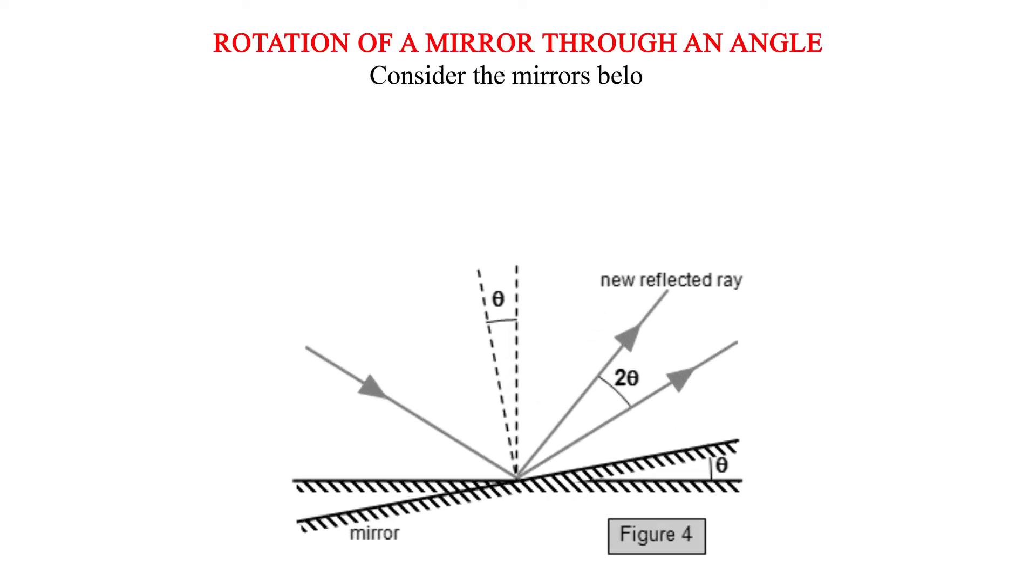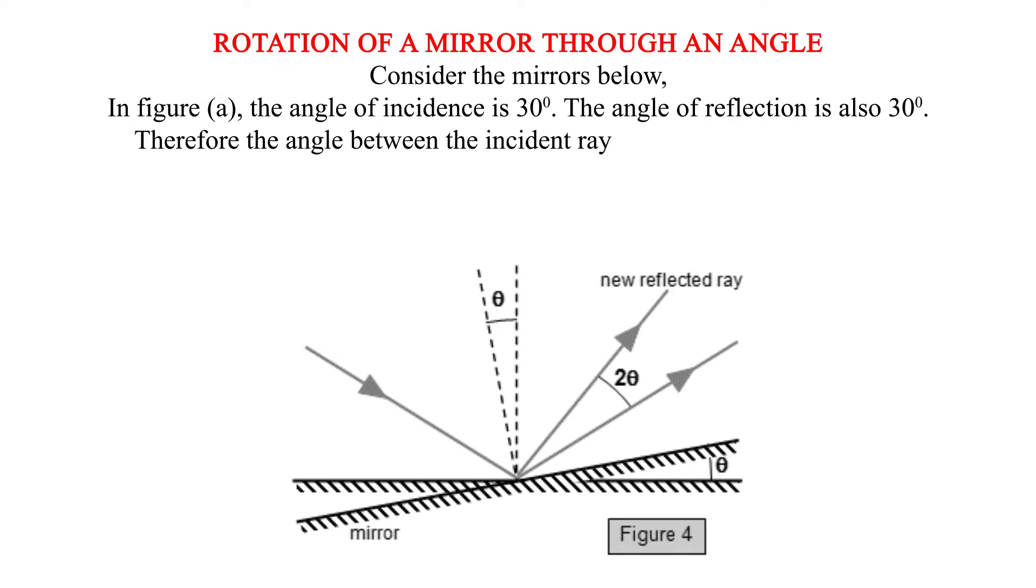Rotation of a mirror through an angle. Consider the mirrors below. In figure A, the angle of incidence is 30 degrees. The angle of reflection is also 30 degrees. Therefore, the angle between the incident ray and the reflected ray is 60 degrees, i.e., 30 degrees plus 30 degrees.